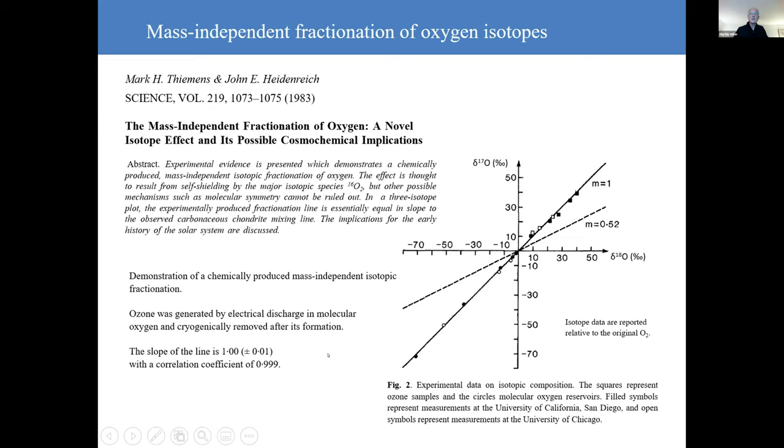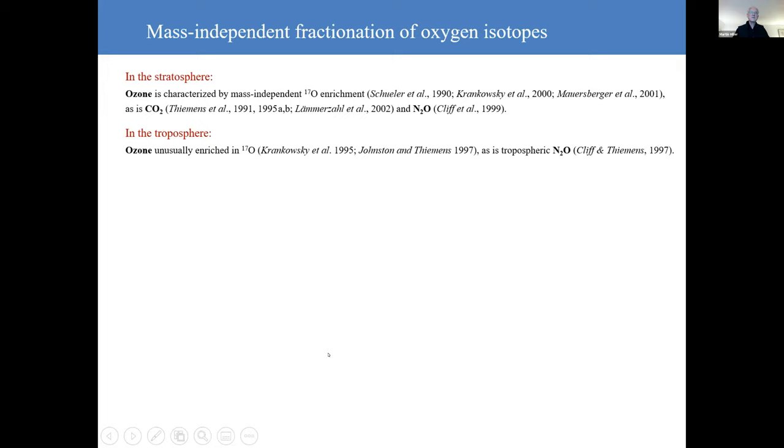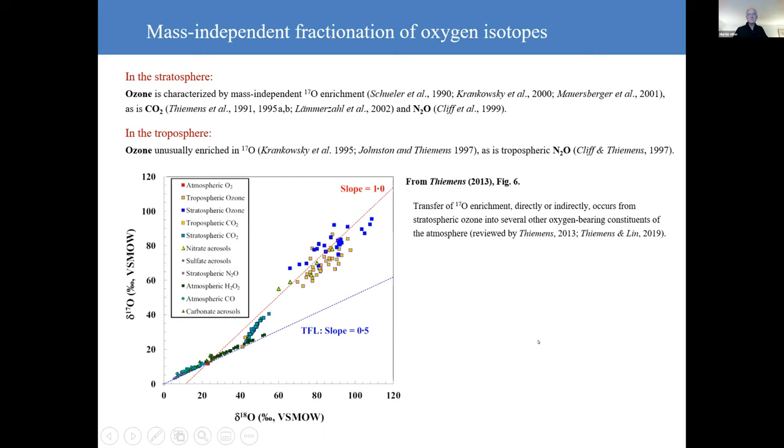Now it was then discovered, this wasn't just a laboratory curiosity, in that ozone in the stratosphere is also characterised by mass independent 17 O enrichment, as is CO2 and nitrous oxide, and in the troposphere we find that ozone is unusually enriched in 17 O. And over the years it's been shown that most oxygen bearing constituents of the atmosphere have mass independently fractionated oxygen. And this plot illustrates that, this is from one of Mark's papers in 2013. And basically it shows that 17 O enrichment can be transferred either directly or indirectly from stratospheric ozone into numerous oxygen bearing constituents of the atmosphere.